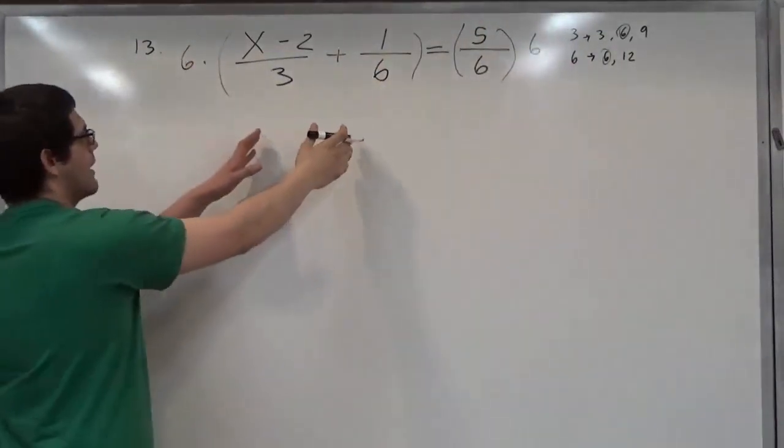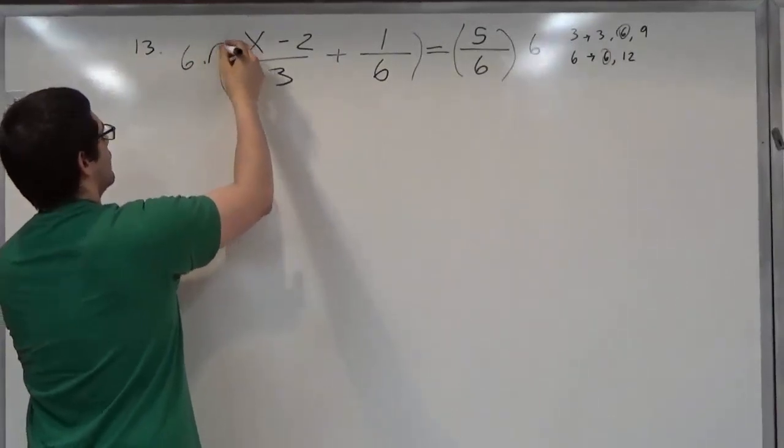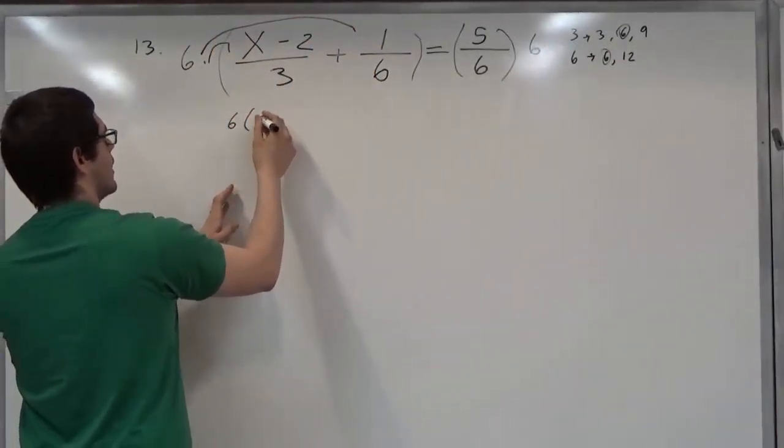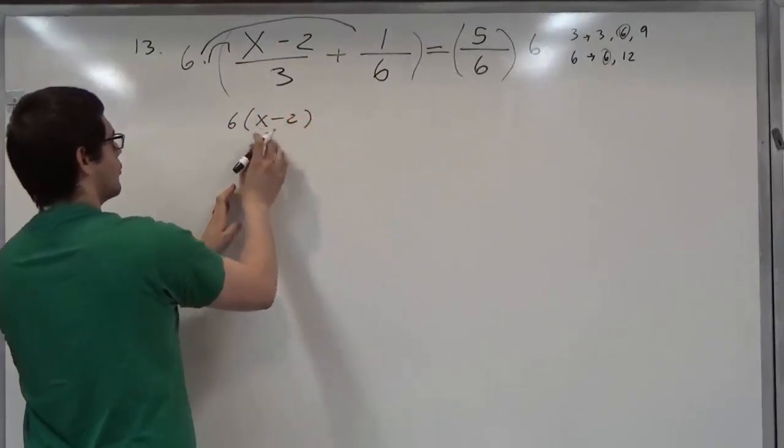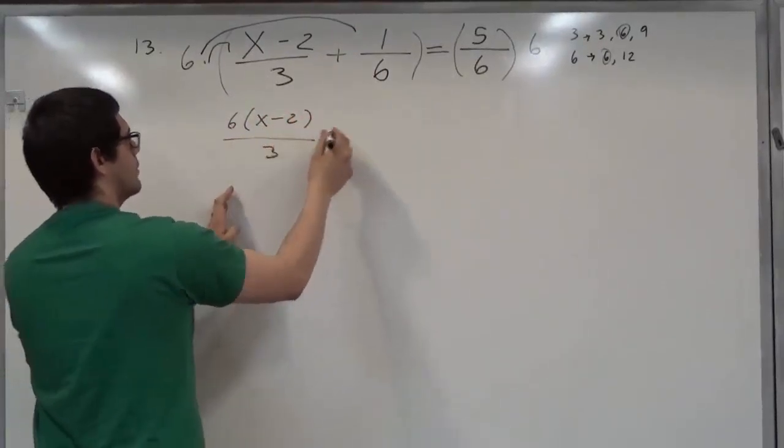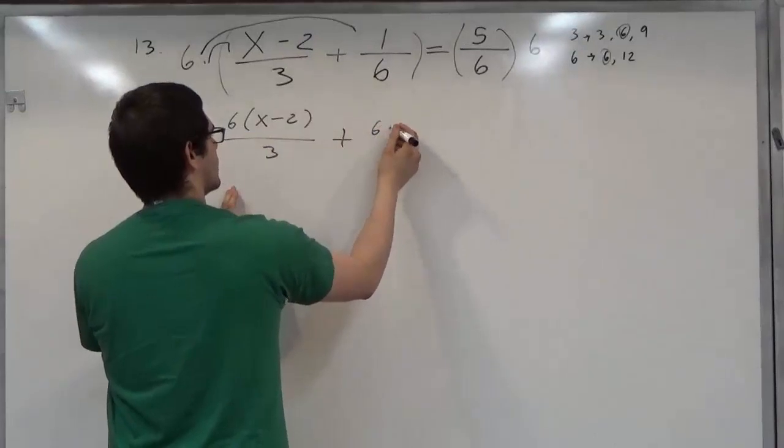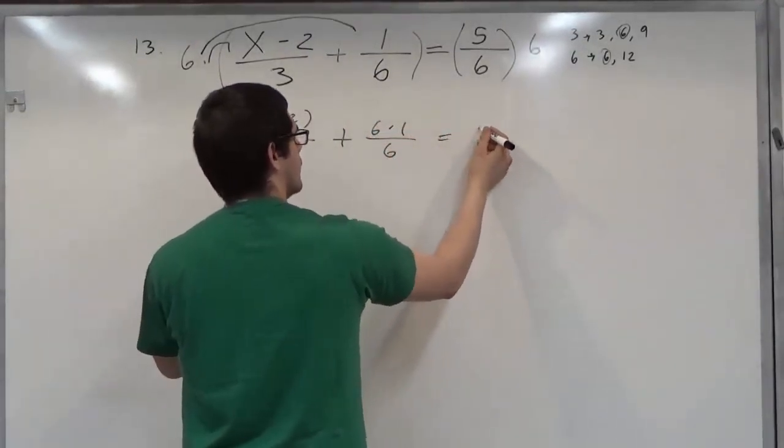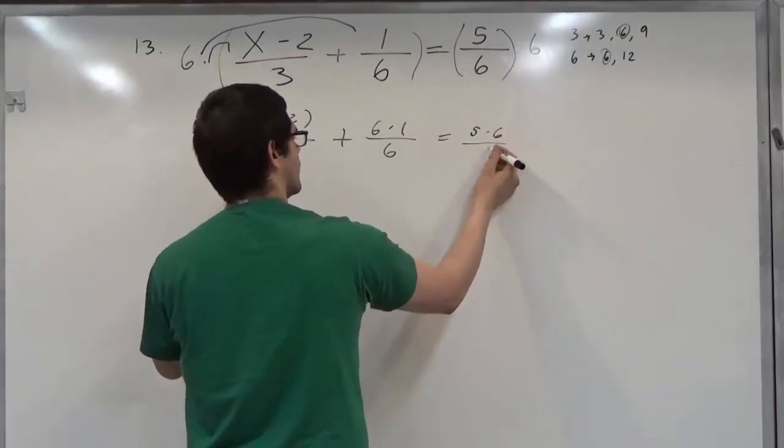In this part we're going to have a distribution where it multiplies this as well as this. So we'll have 6 times (x minus 2) over 3 plus 6 times 1 over 6 equals 5 times 6 over 6.